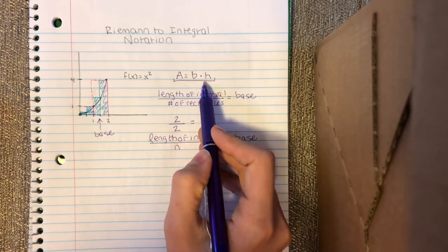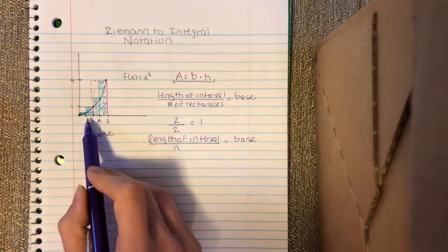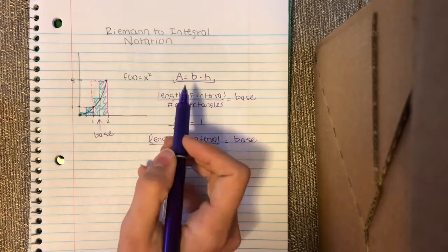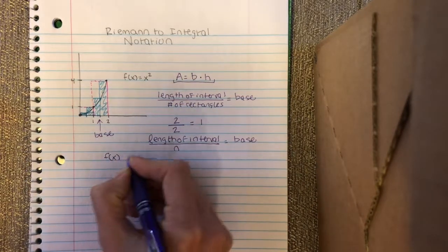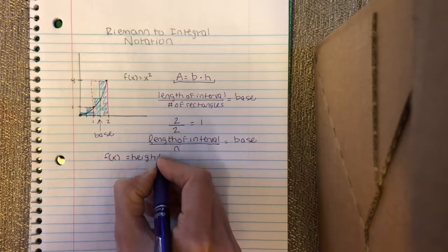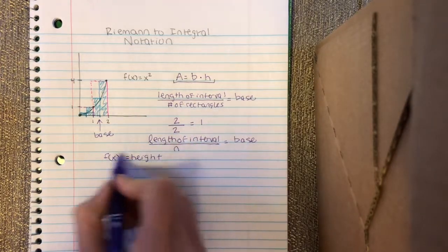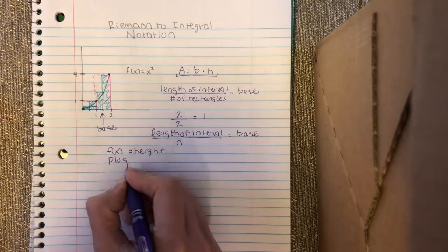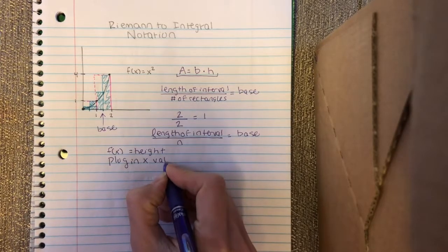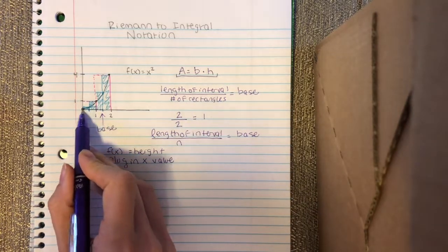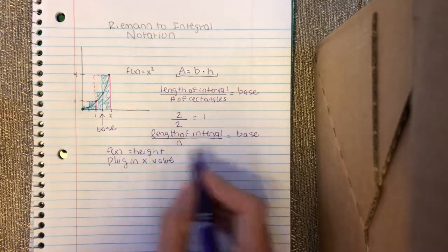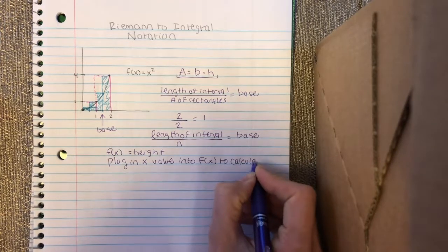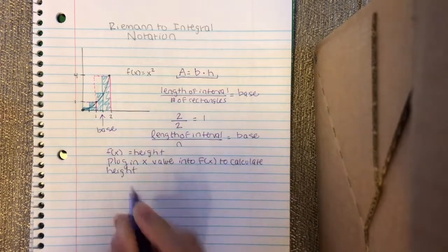But the second thing we would need in our formula, other than the base, would be the height. When we were doing our Riemann sums today, you went over to the endpoint that you were using and plugged in that endpoint into our function to find the height. So we would say that f of x represents the height of each rectangle. So I would match up some base with some height, and that would give me area of one rectangle. We plug in, as a note, an x value. That would be the length of one base. So I move over one base, I would plug in an x value here into f of x to really calculate the height.